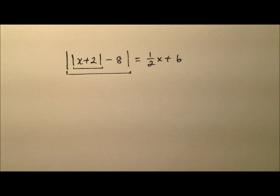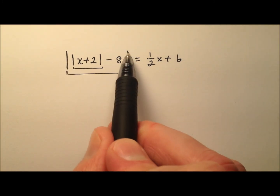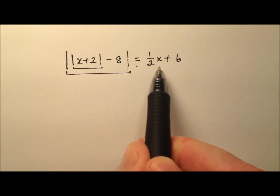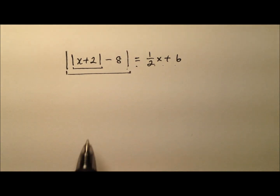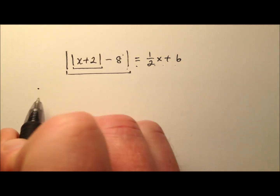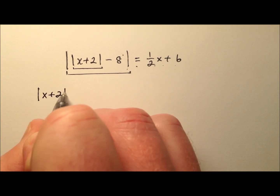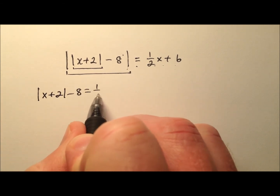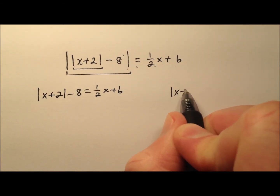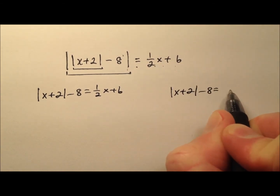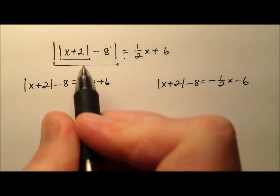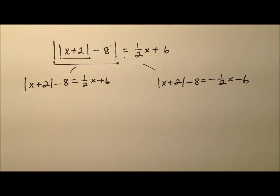How do we solve any absolute value equation? We isolate the absolute value expression. We have this absolute value expression equal to one-half x plus 6, and then we take the positive and the negative. So we're going to say the absolute value of x plus 2 minus 8 equals positive one-half x plus 6, and the absolute value of x plus 2 minus 8 equals negative one-half x minus 6. Here I've split it up into two separate equations.